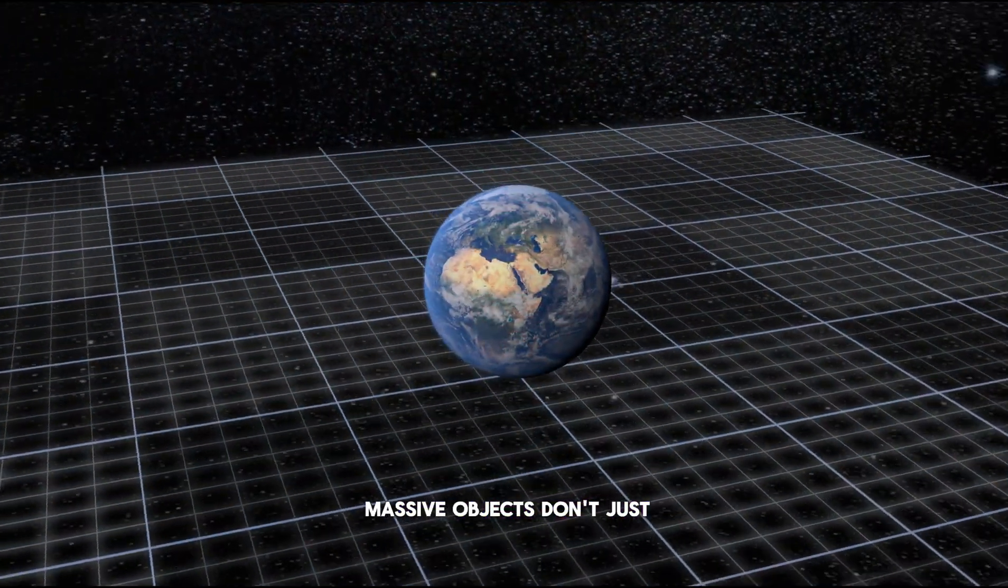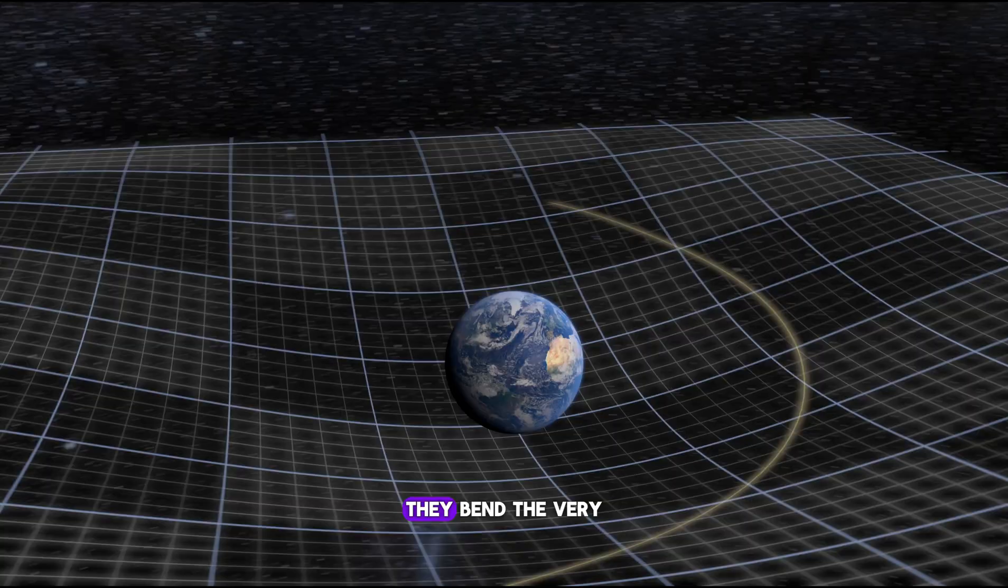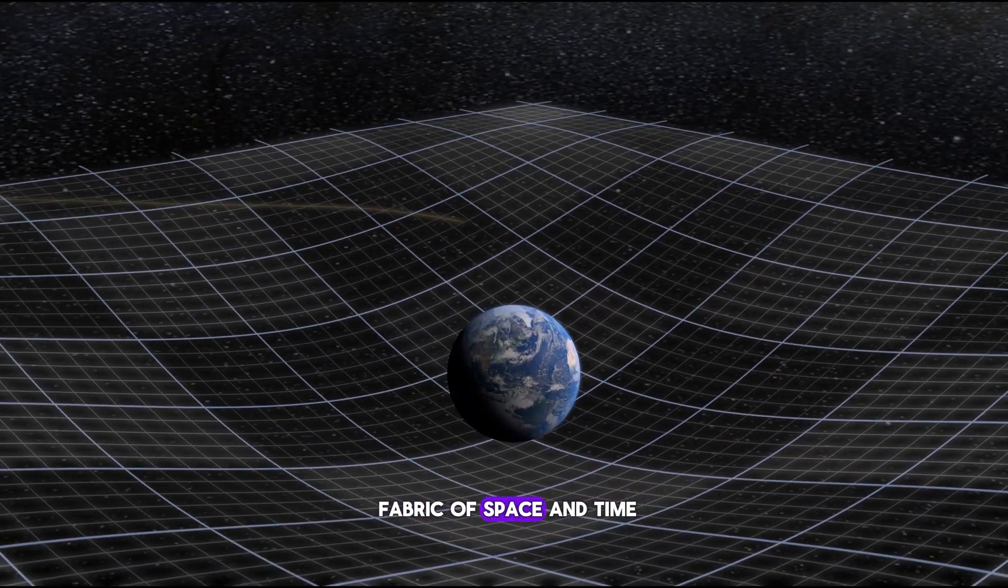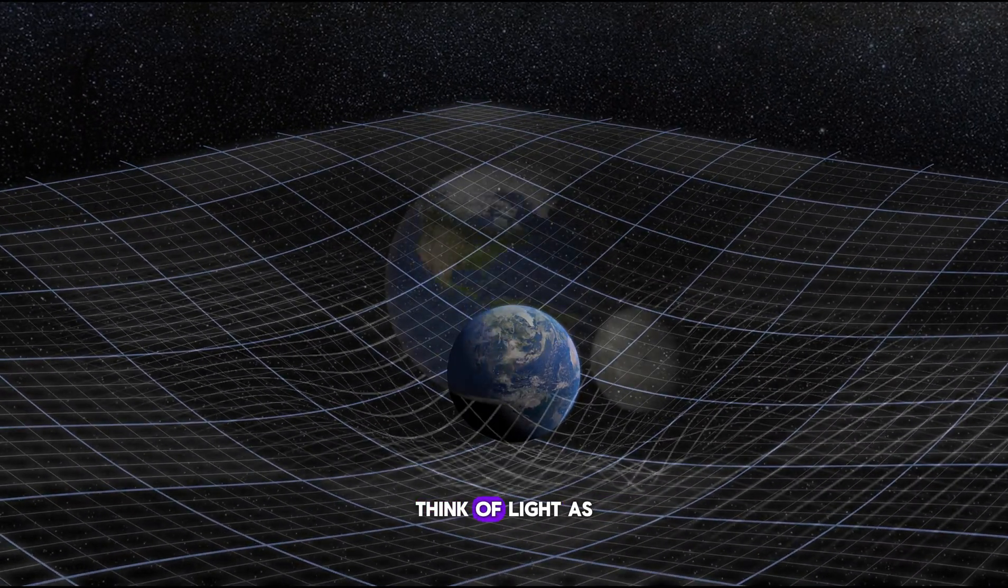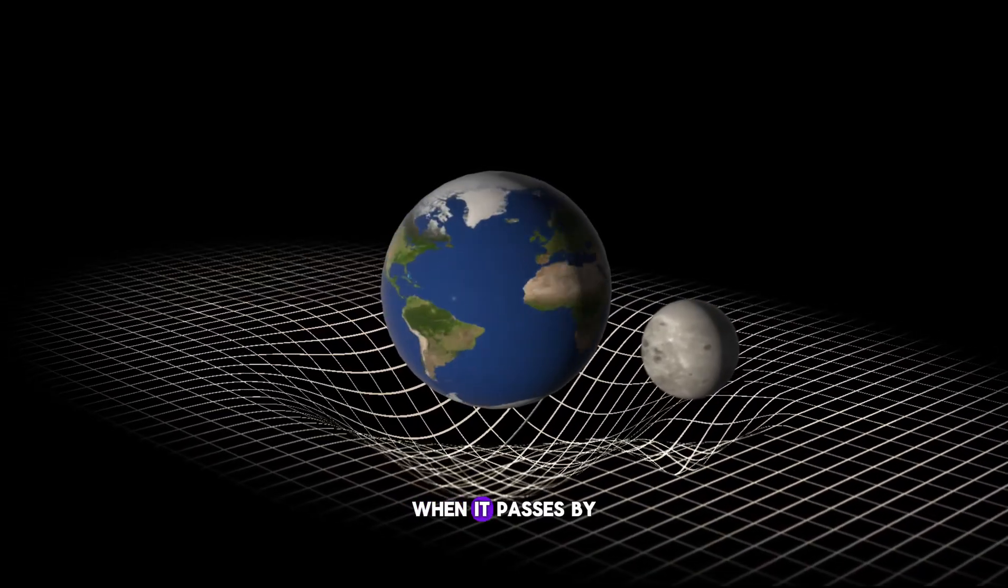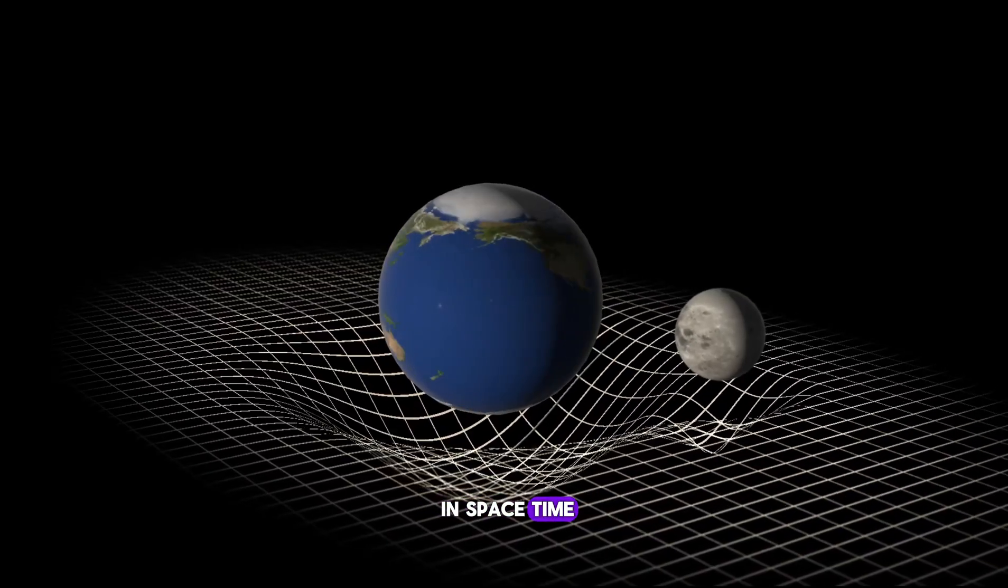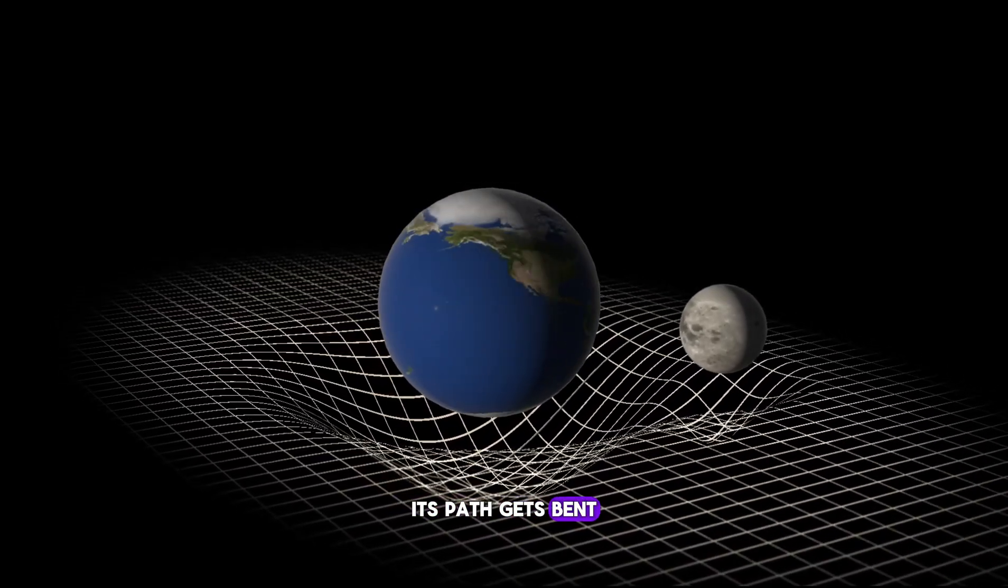Another clue uses light itself. Einstein taught us that massive objects don't just pull on things. They bend the very fabric of space and time. Think of light as a marble rolling in a straight line. When it passes by a massive object, it follows the curve in space-time. Its path gets bent.